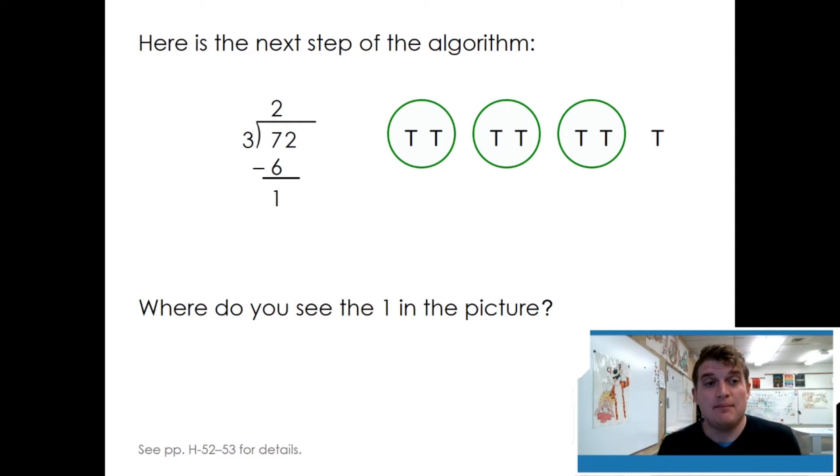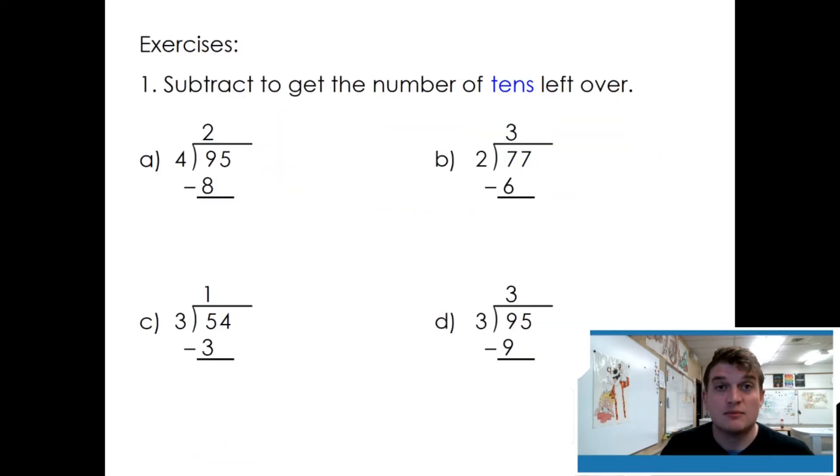Here's the next step of the algorithm. Where do you see the one in the picture? There's one ten left over. Subtract to get the number of tens left over. Nine minus eight is one. There's one ten left over. Try the next three subtractions.